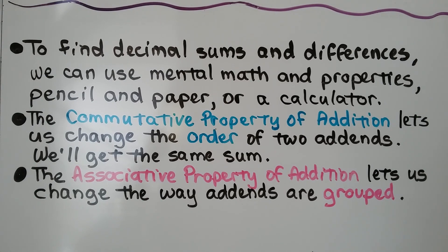The commutative property of addition lets us change the order of two addends. We'll get the same sum. The associative property of addition lets us change the way addends are grouped. That's why it's referred to as the grouping property.